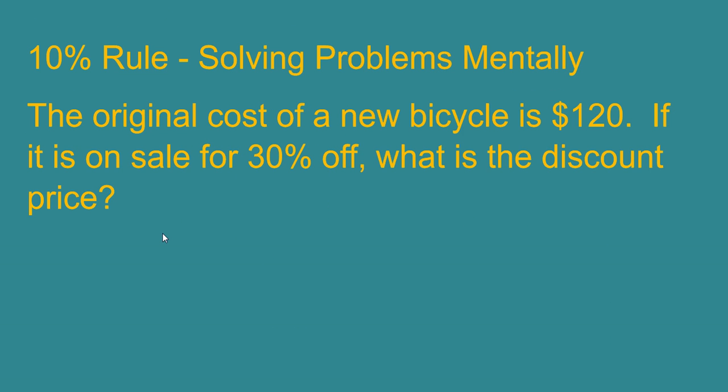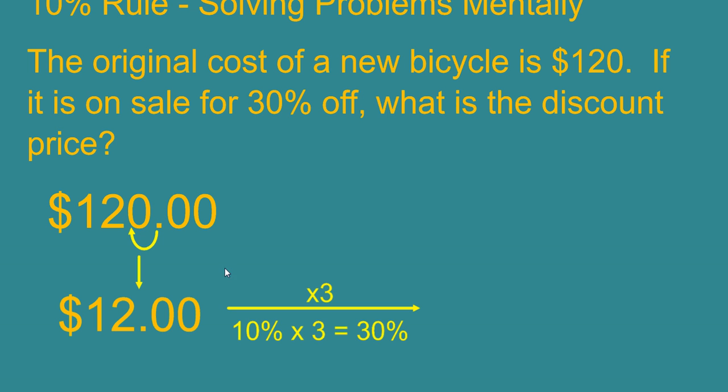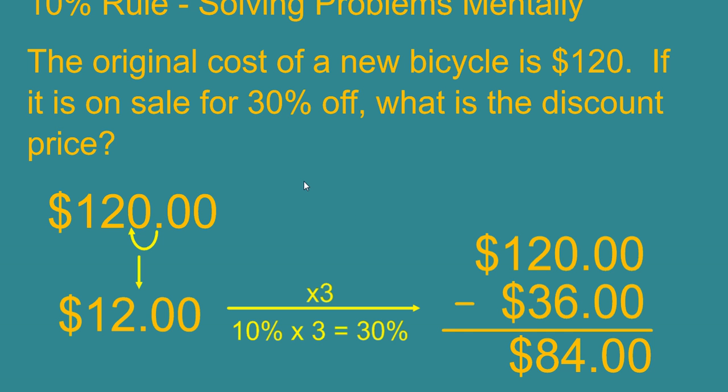Why don't you try this next one? The original cost of a new bicycle is $120. If it is on sale for 30% off what is the discount price? Go ahead and find 10%. What did you come up with? Okay. And you have 30% discount though. So we have to think about how that relates to 10%. That's right times 3. So now we can subtract $36 from the original price and we get $84 as the discount price.